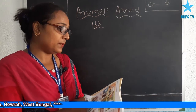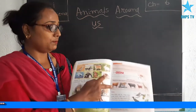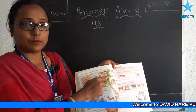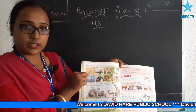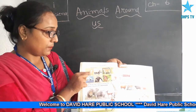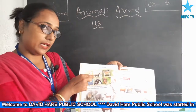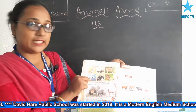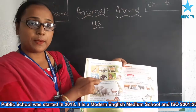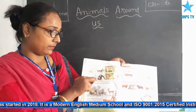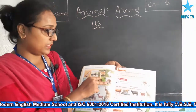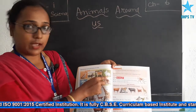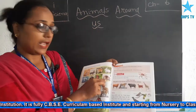Some animals are big and some are small. Here some pictures are given. The big animals are cheetah, rhinoceros — a big and huge animal — whale, which is a sea creature, and chimpanzee, also a big creature. The small animals are dog, rabbit, butterfly, and mouse.